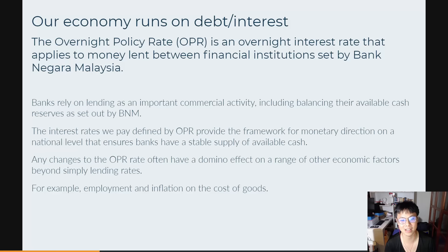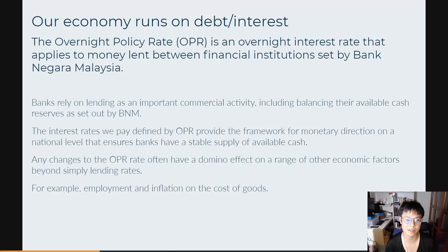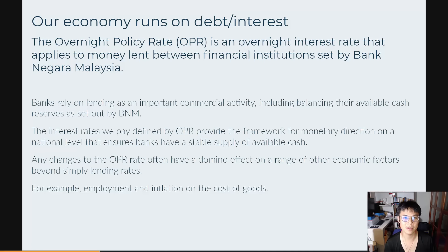So why do we need OPR in the first place? Banks rely on lending as an important commercial activity — that's how they make money, including balancing available cash reserves as set out by Bank Negara Malaysia. The interest rates we pay, defined by OPR, provide the framework for monetary direction on a national level that ensures banks have a stable supply of available cash. The banking sector is very heavily regulated and must always maintain a certain liquidity, otherwise the bank could go bankrupt.